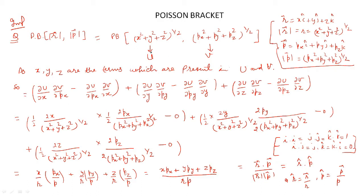Let us say the magnitude of position r is function u and the magnitude of momentum p is function v. Now x, y, z are present in u and px, py, pz are present in v. So the Poisson Bracket will take the form: (∂u/∂x)(∂v/∂px) − (∂u/∂px)(∂v/∂x) + (∂u/∂y)(∂v/∂py) − (∂u/∂py)(∂v/∂y) + (∂u/∂z)(∂v/∂pz) − (∂u/∂pz)(∂v/∂z).